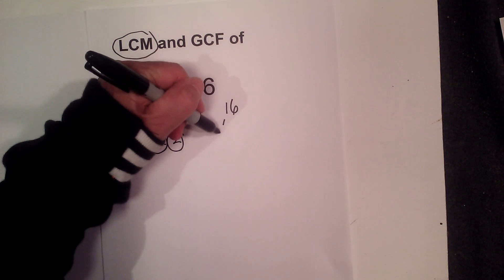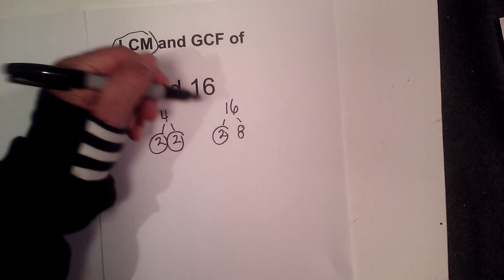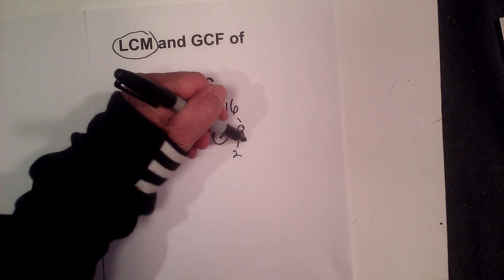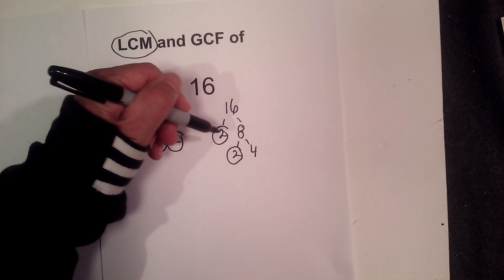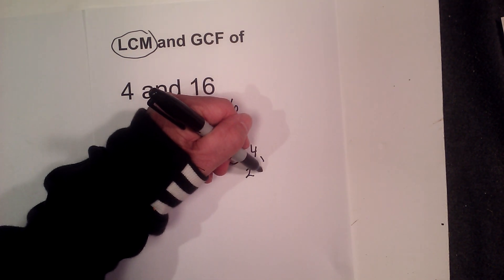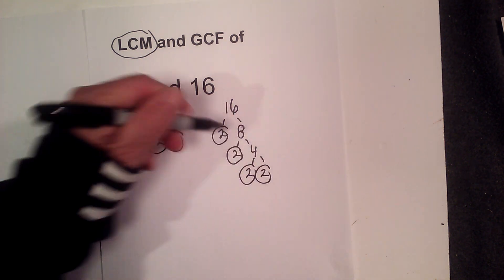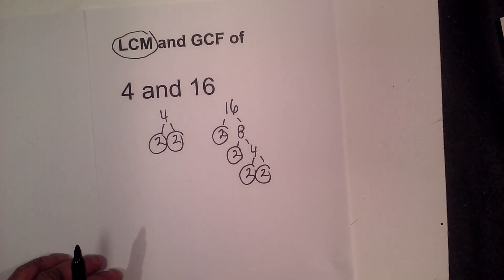Create a factor tree for 4, it's 2 times 2. Now for 16 we have 2 times 8, circle the 2 because it is prime. Now 2 times 4, circle the 2 because it is prime, now 2 times 2.